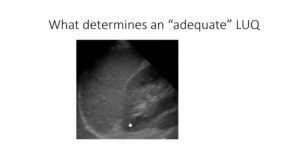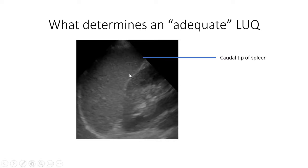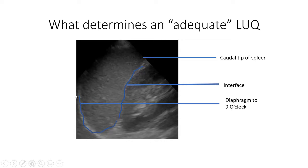The left upper quadrant is trickier. You need to see the diaphragm because fluid is more likely to accumulate between the diaphragm and the spleen. You also need to see the interface and the caudal tip of the spleen. You need to see the diaphragm all the way up to about nine o'clock of the kidney - if you drew a clock in the kidney, you'd need to see to nine o'clock. If you can see the diaphragm to that point with no fluid between the diaphragm and the spleen, no fluid in the interface, no fluid at the caudal tip, and the kidney disappears on both sides when swept, you can call that a negative scan. Fluid anywhere in the interface, subdiaphragmatic area, or around the caudal tip is a positive scan.